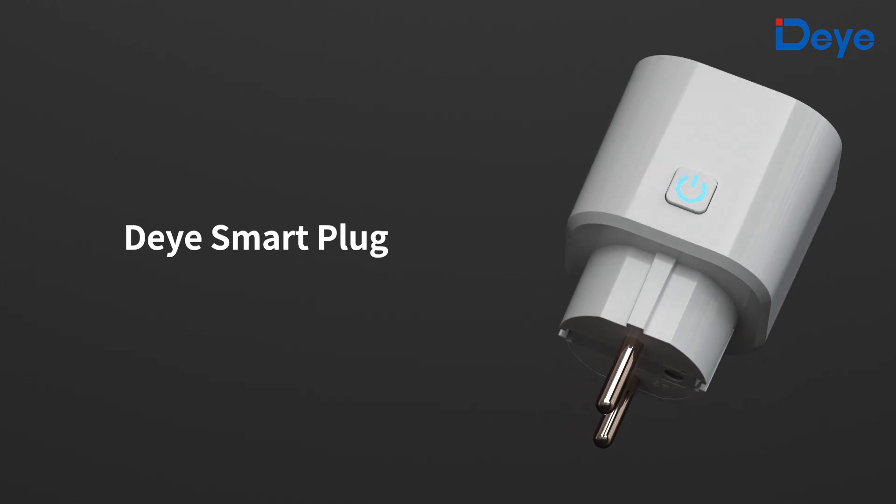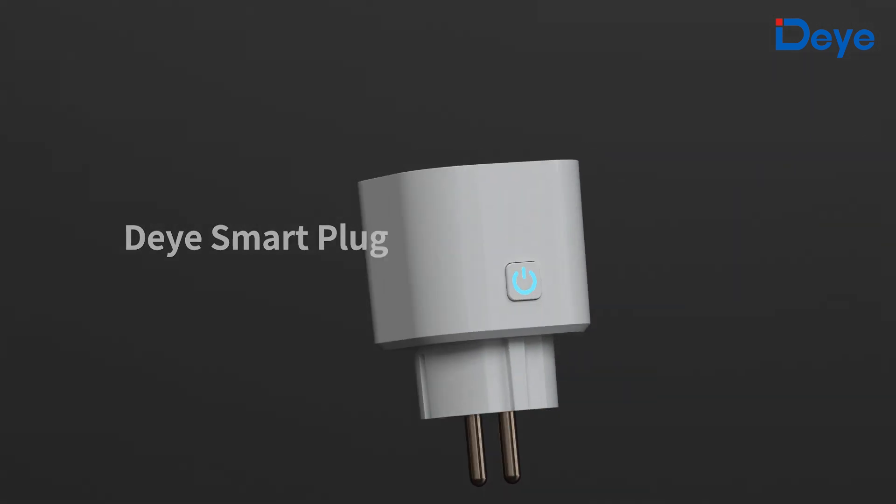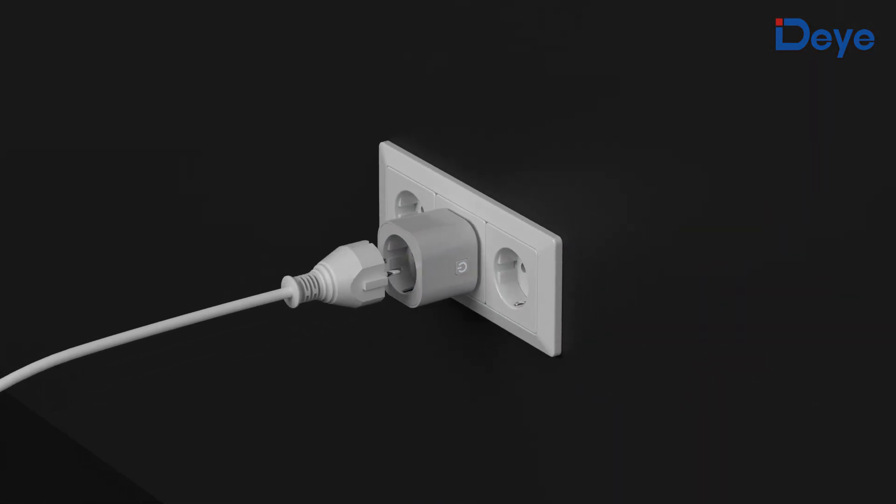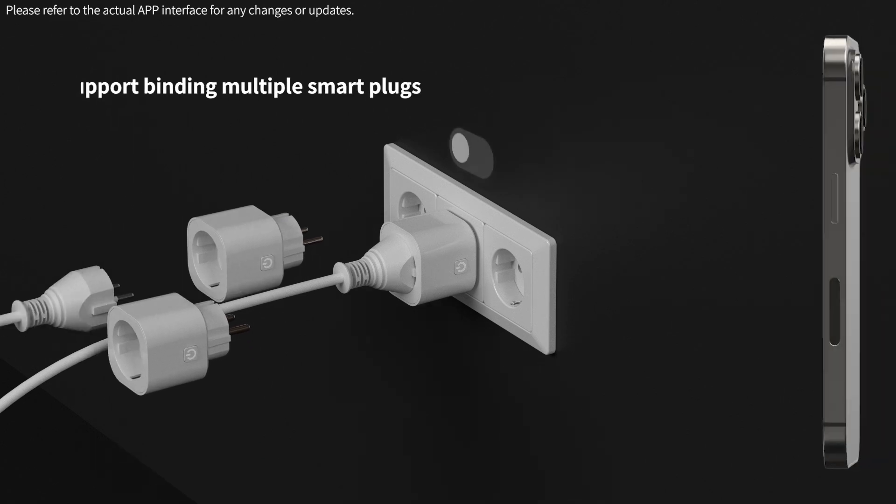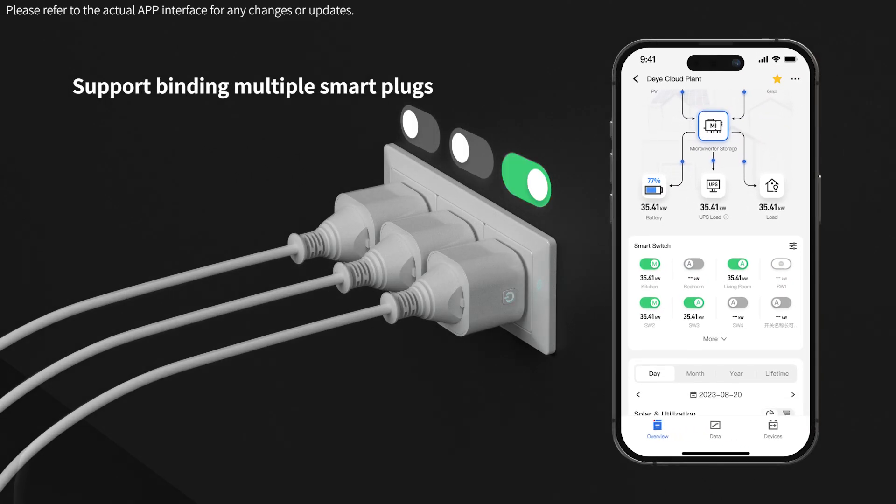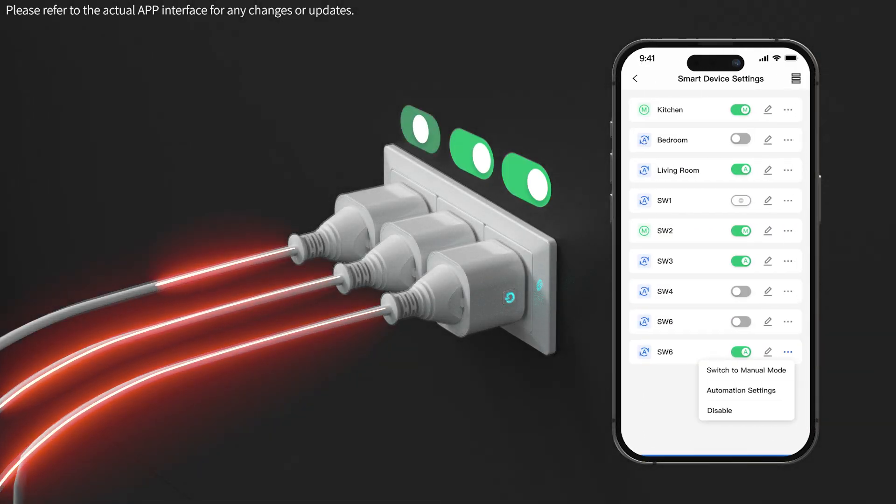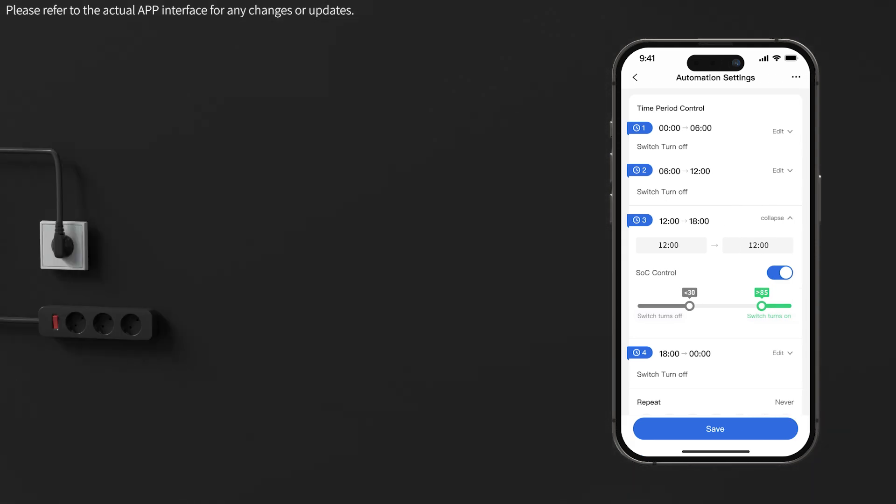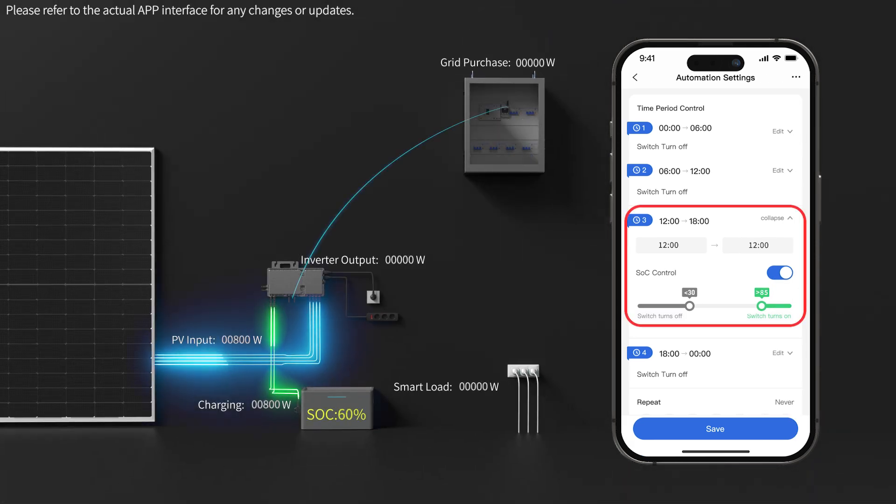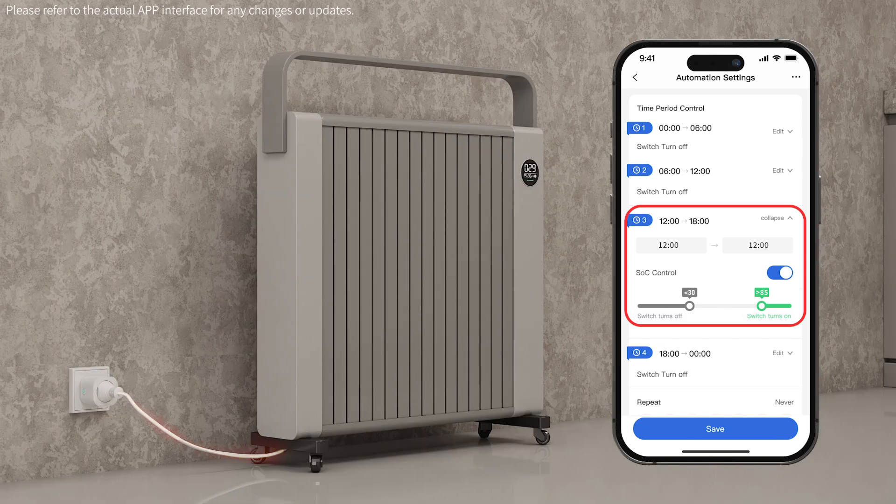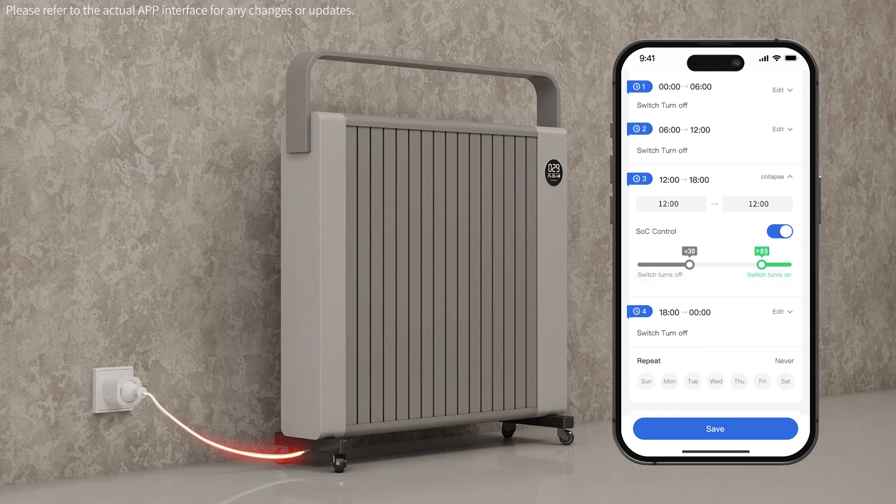If equipped with a DeYi smart plug, any home socket can be upgraded to a smart socket. With remote control capabilities, you can manually turn the smart plug on or off through the DeYi cloud. Additionally, you can set conditions for automated control that activates when the photovoltaic power generation is abundant and the battery state of charge exceeds the preset threshold, automatically turning the plug on.